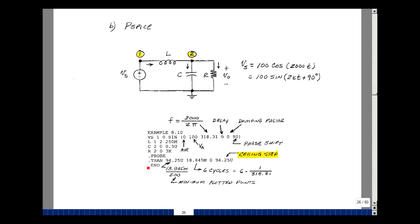I've got a voltage source between node one and zero. I've got an inductance between one and two with a value of 250 millihenries. In SPICE, uppercase M or lowercase M means 10 to the minus 3. Capacitance between two and zero has a value of 0.5 microfarads, and a resistance between two and zero with a value of 3,000.